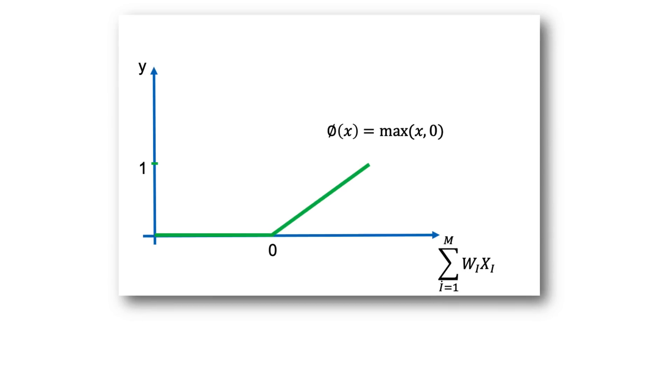The rectifier function is one of the most popular functions for artificial neural networks. It goes to 0 below 0, and from there it gradually progresses as the input value increases. The advantage of using the rectifier function is that not all neurons are activated at the same time, making it far more computationally efficient compared to the sigmoid and hyperbolic tangent functions. A neuron will be deactivated only when the output is a linear transformation. The rectifier function also accelerates the convergence of gradient descent towards the global minimum of the loss function due to its linear non-saturating property.